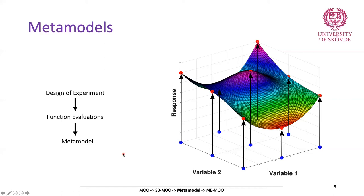That's what a metamodel is and how you create it. There are several metamodeling methods available, such as RBF (radial basis functions), kriging, support vector regression, and neural networks. What you do is create your design of experiment, train your metamodel with function evaluations, create the metamodel, and then use it later instead of running simulations.